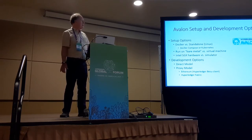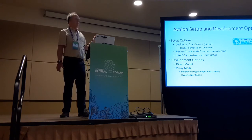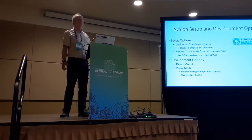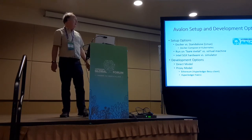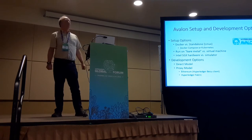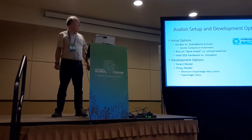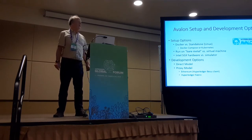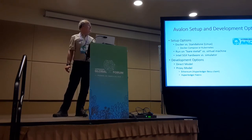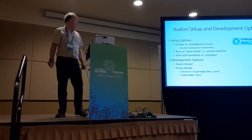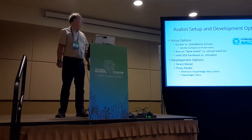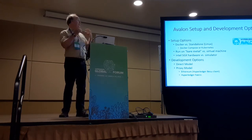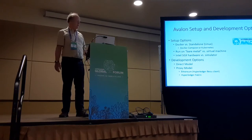For development options, you could use a direct model or the proxy model. The direct model is not using the blockchain. The proxy model is in coordination with the blockchain technology. Currently we have two implementations: one is Ethereum blockchain, or an enterprise Ethereum that uses Hyperledger Besu. Another option we currently have is Hyperledger Fabric, and of course we could extend it to other blockchain platforms later.